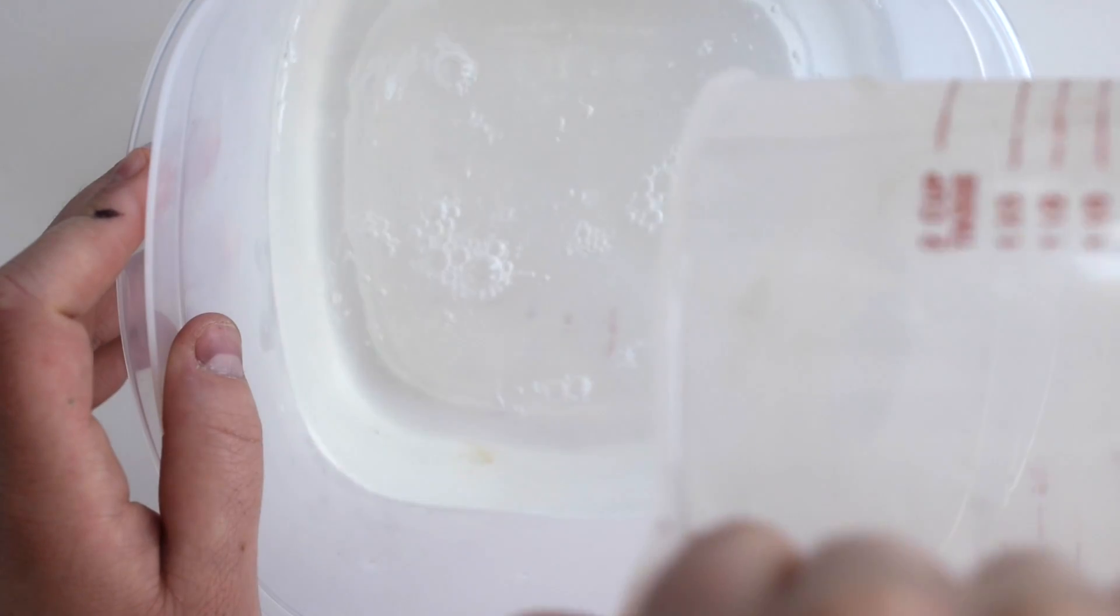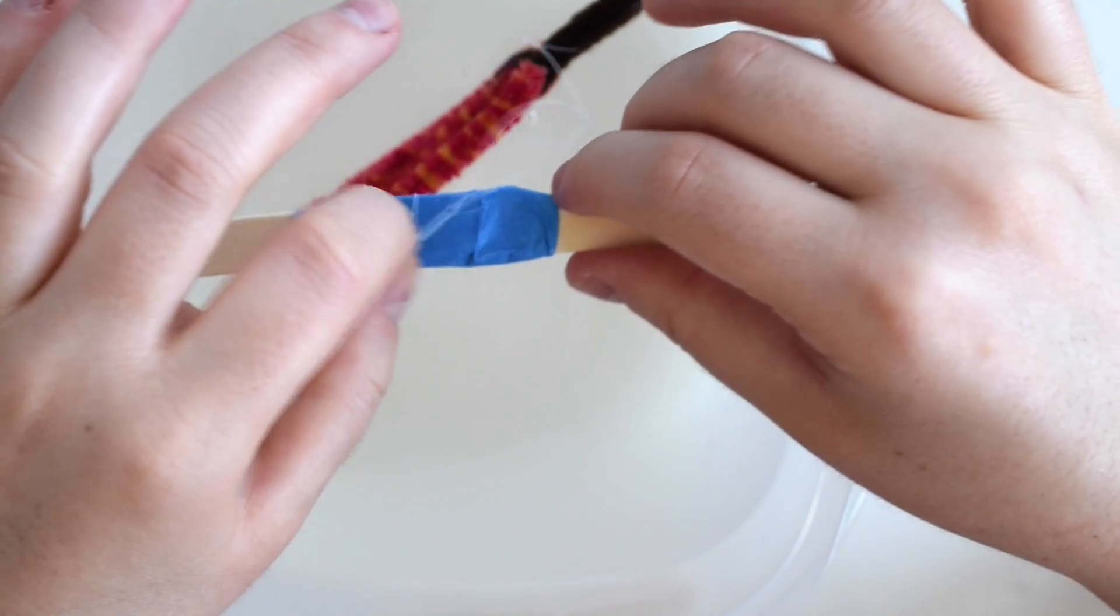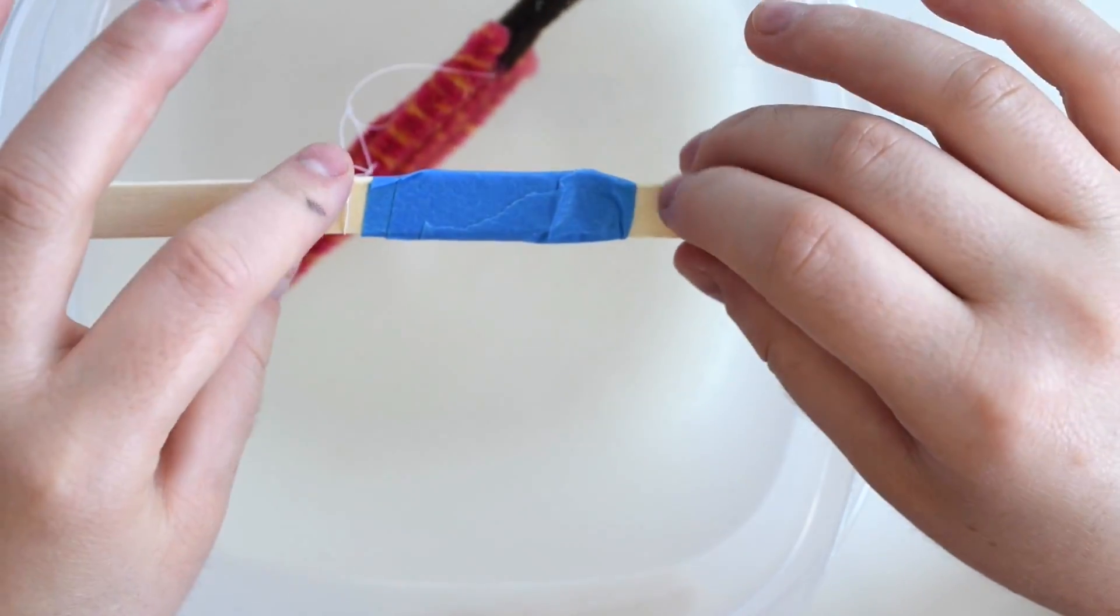Next, in a container, mix warm water with the borax at the ratio of three tablespoons of borax to one cup of water. And no surprises here, Rufio still wanted to be involved. Then you'll want to tie some thread to your pipe cleaner creations, making a loop and placing them onto something that you can rest on top of the container.